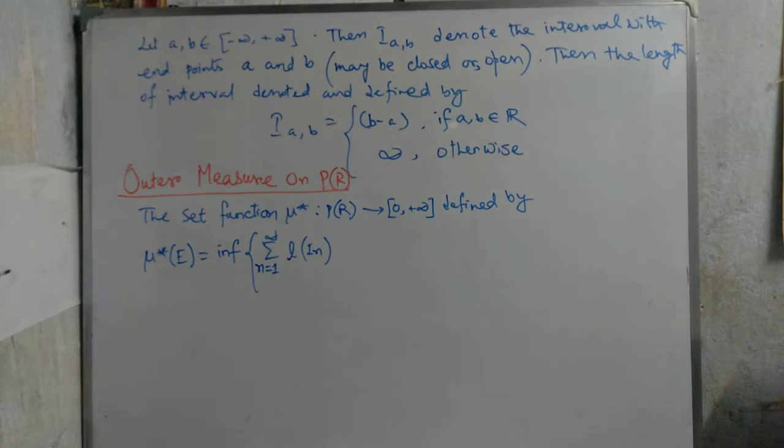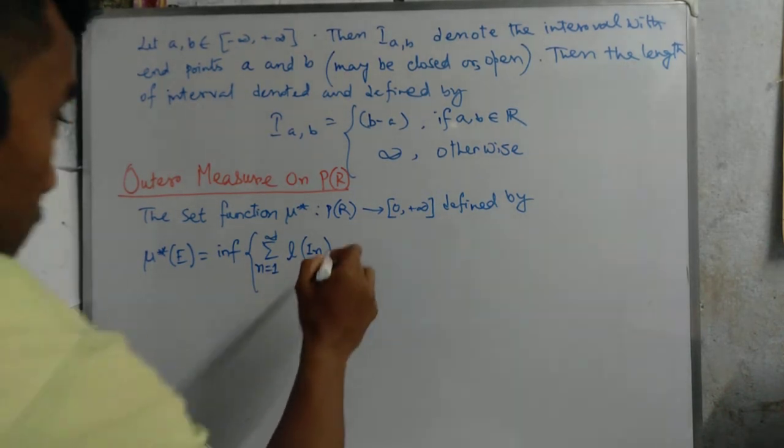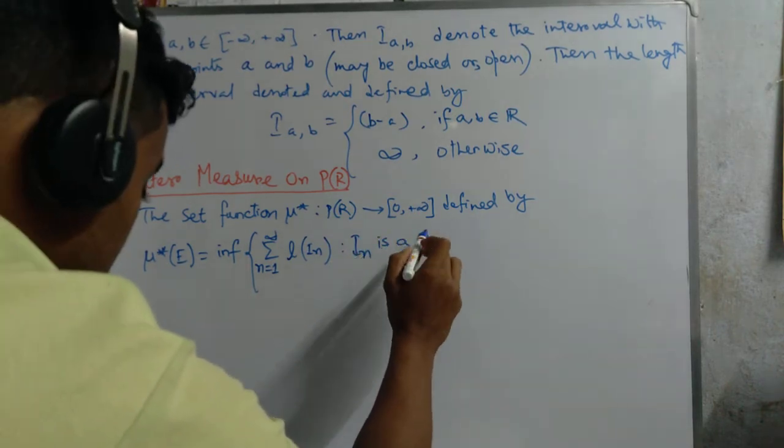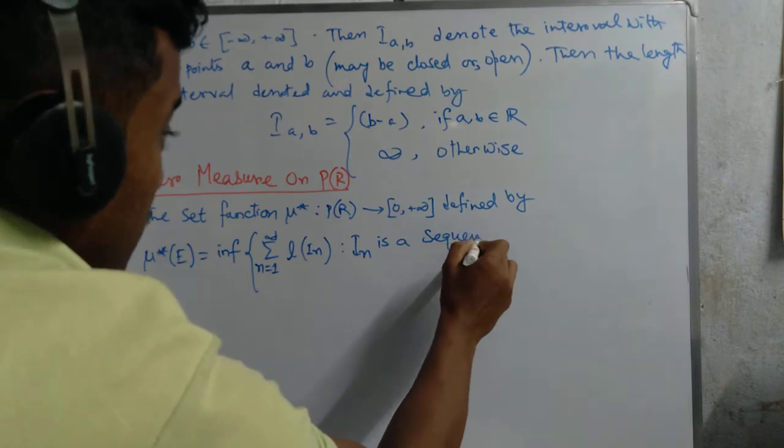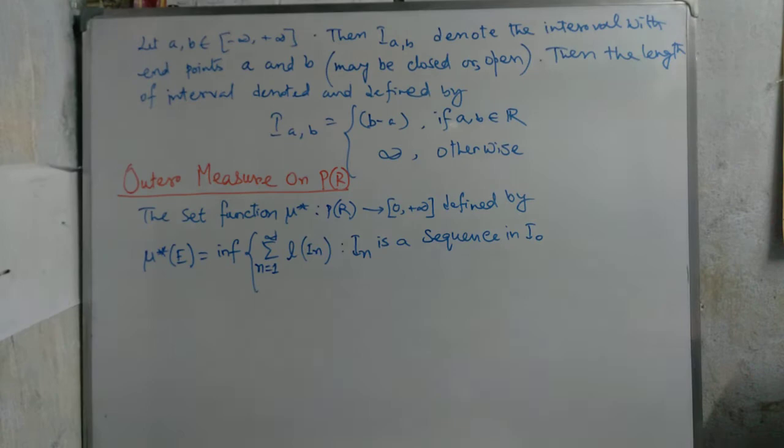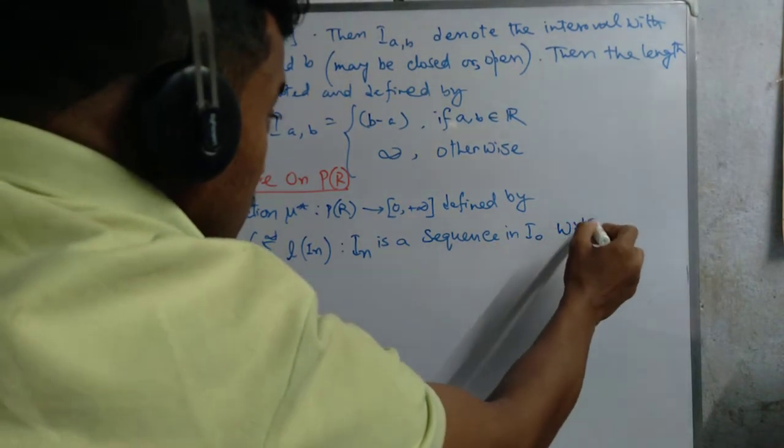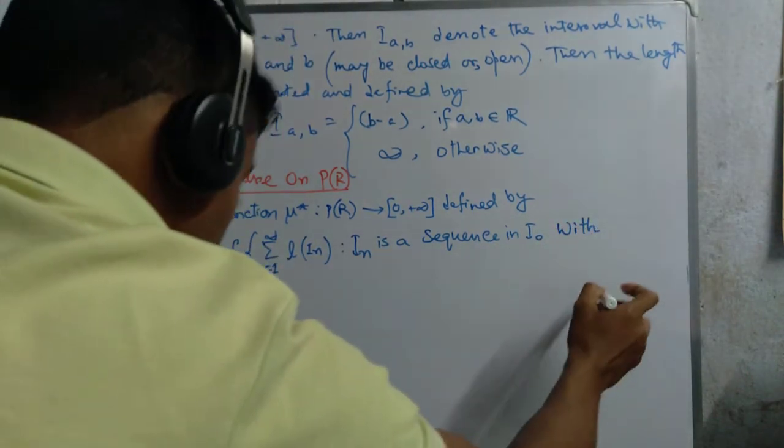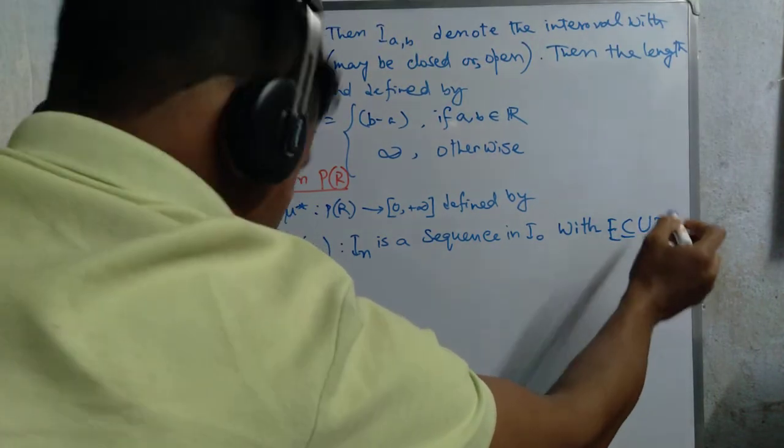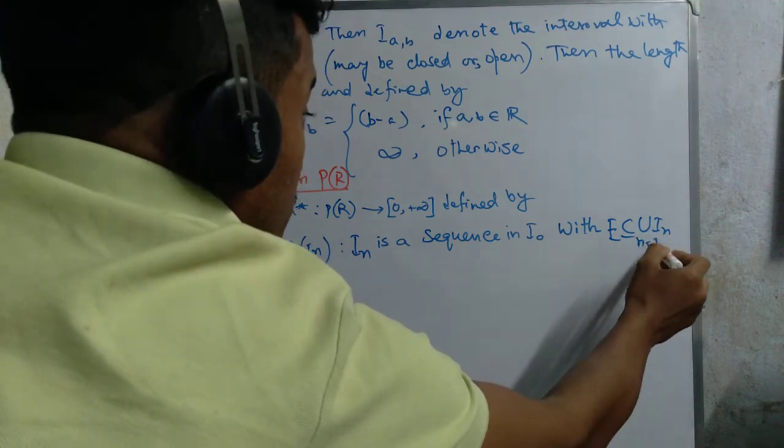This is the infimum of L(I_n) such that I_n is a sequence in I_0 with E subset of union of I_n from n equals 1 to infinity.